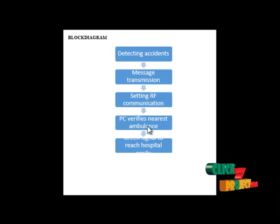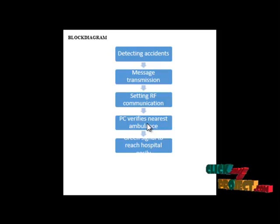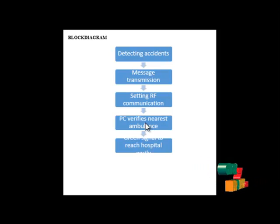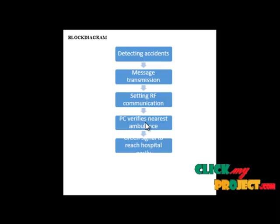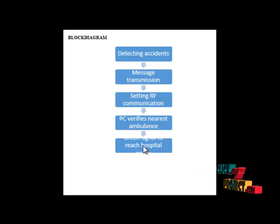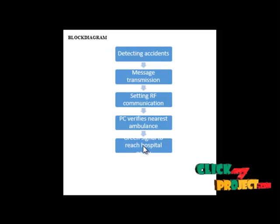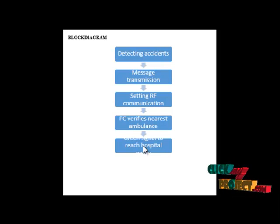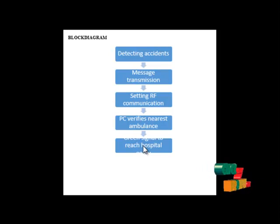Then we find the location spot using the RF transmitter, and the information is transmitted. The PC verifies the nearest ambulance, and the message is received through the RF transmitter receiver. A radio receiver is an electronic device which picks up the desired signal, rejects the unwanted signal, and demodulates the carrier signal to get back the original modulating signal.